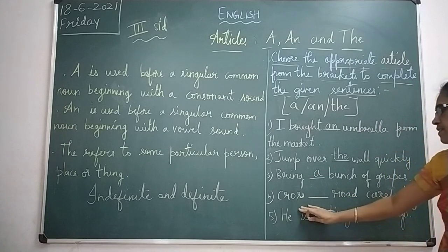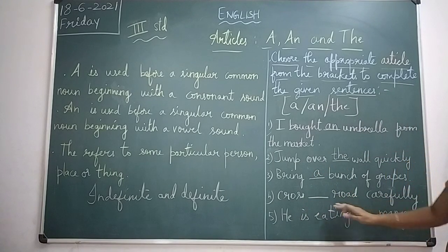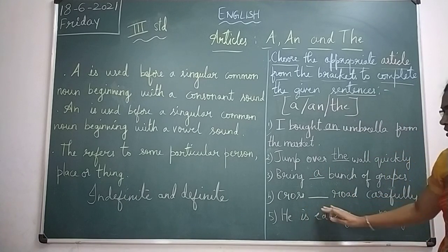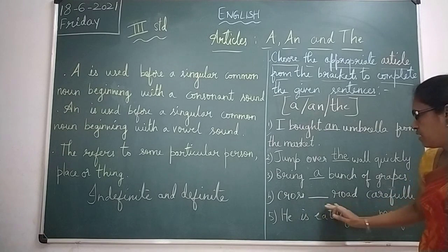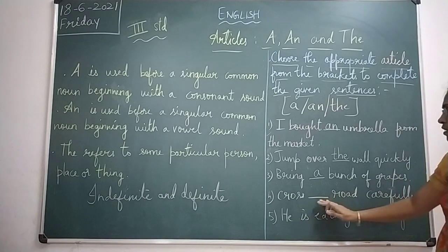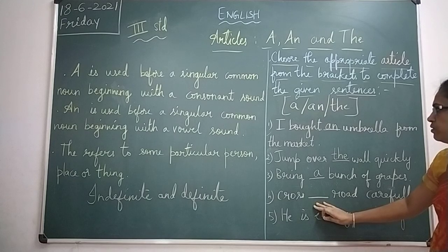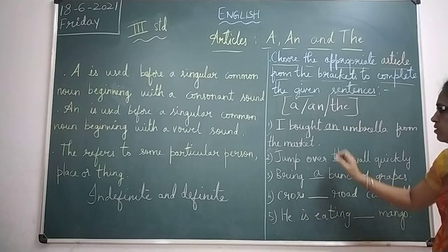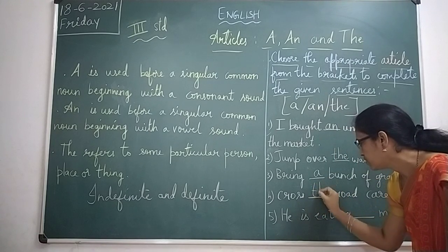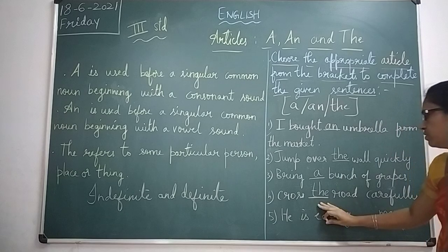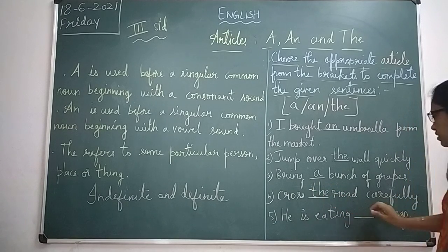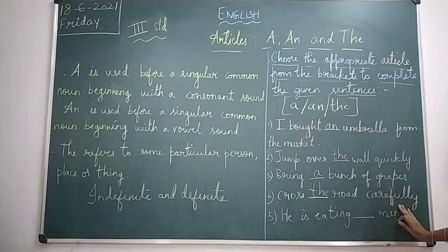The next sentence is: 'Cross dash road carefully.' Here we have to choose 'the' because it refers to a particular road. Cross the road carefully.